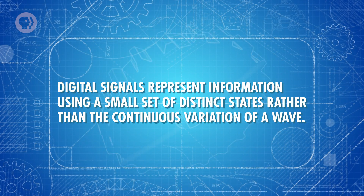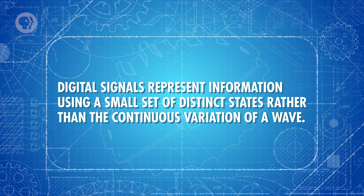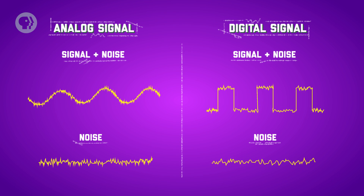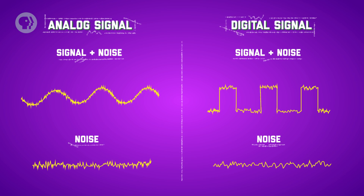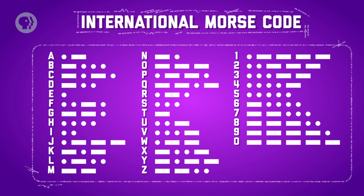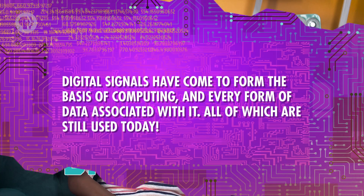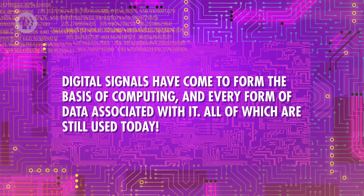That work would be vital once signal processing entered the digital age. Digital signals represent information using a small set of distinct states, rather than the continuous variation of a wave. Instead of FM radio, where changes in frequency translate exactly to changes in sound, digital radio sends the data piece by piece, and everything is reassembled on the receiving end. Because the different states of the signal can be more distinct, they're much less susceptible to noise – a large difference is easier to distinguish than a small one, even when it gets distorted. Morse code, with its dots, dashes, and spaces, was an early digital communication system, but it would take the advent of computers for digital signaling to really take off. And it was Shannon's work that allowed computer scientists and electrical engineers to find ways of encoding different kinds of information in terms of ones and zeros – what we now call binary code. Digital signals have come to form the basis of computing and every form of data associated with it, all of which are still used today.